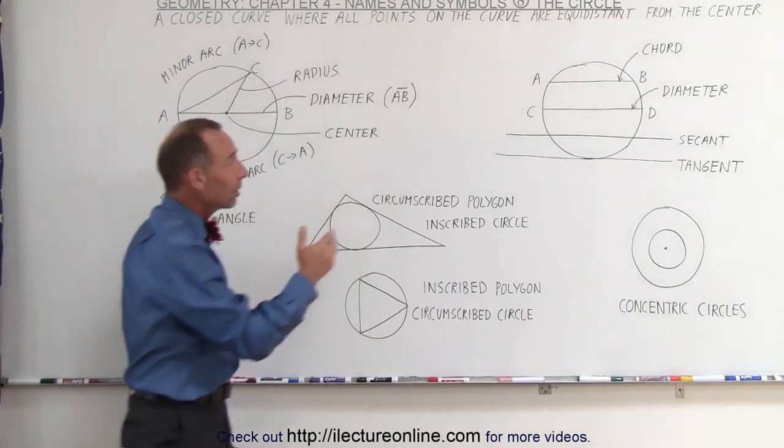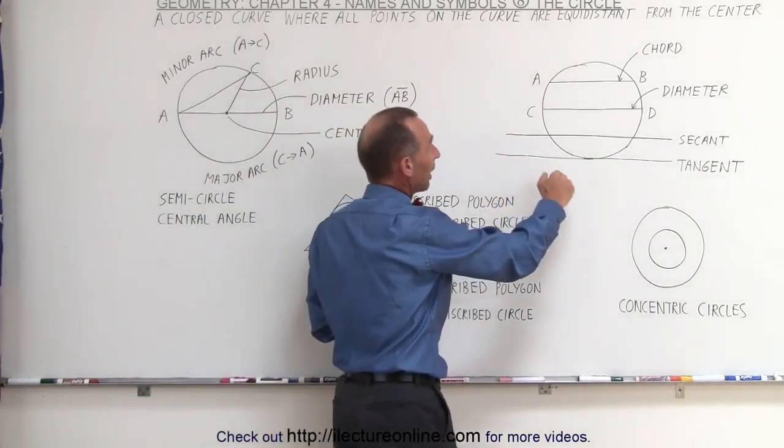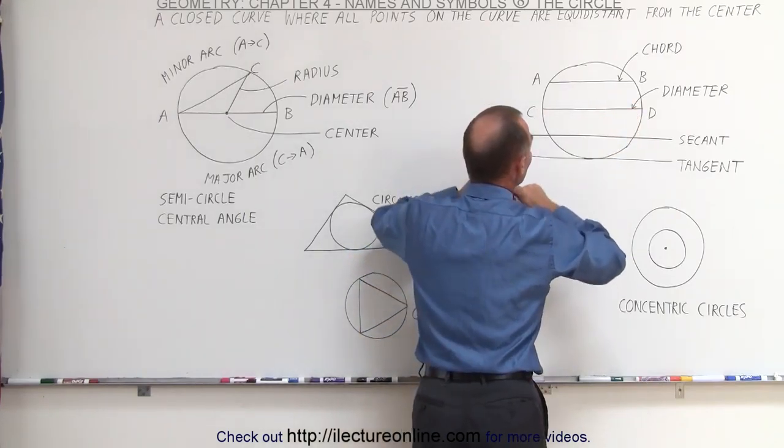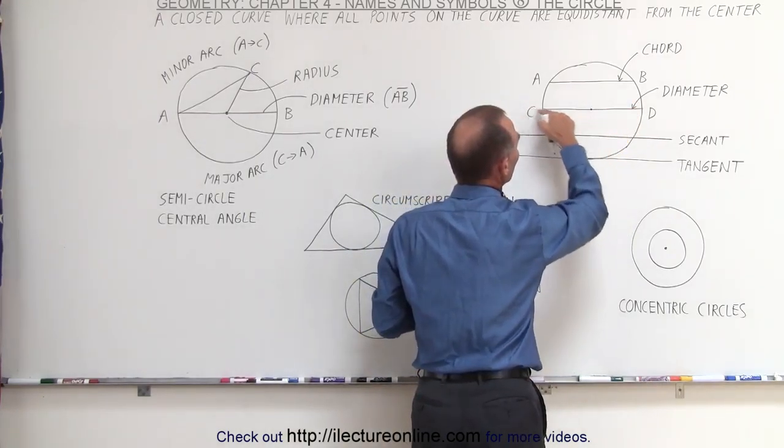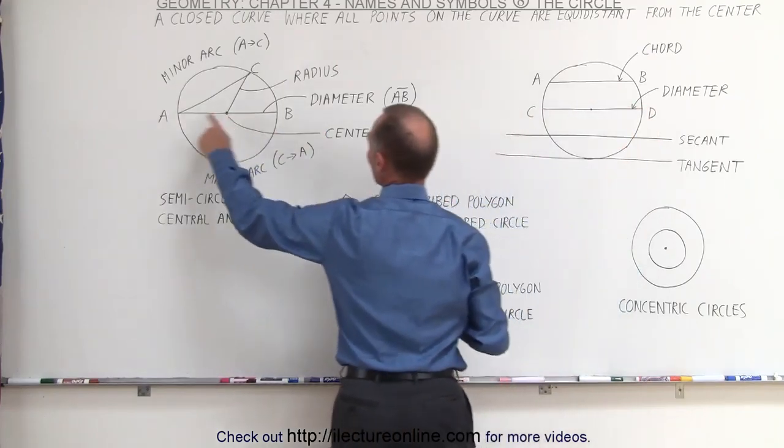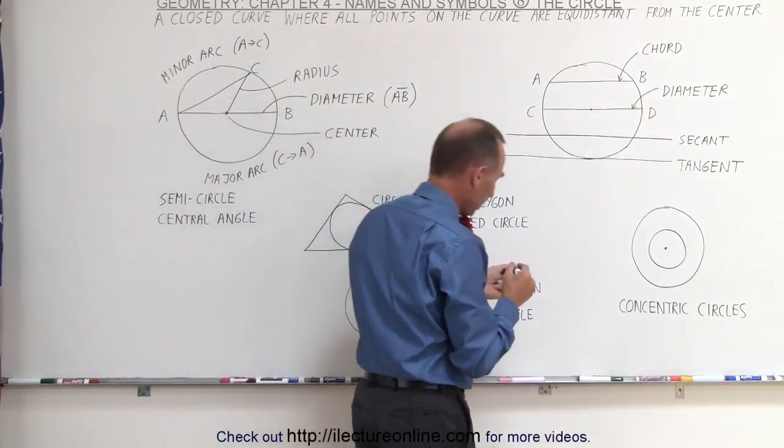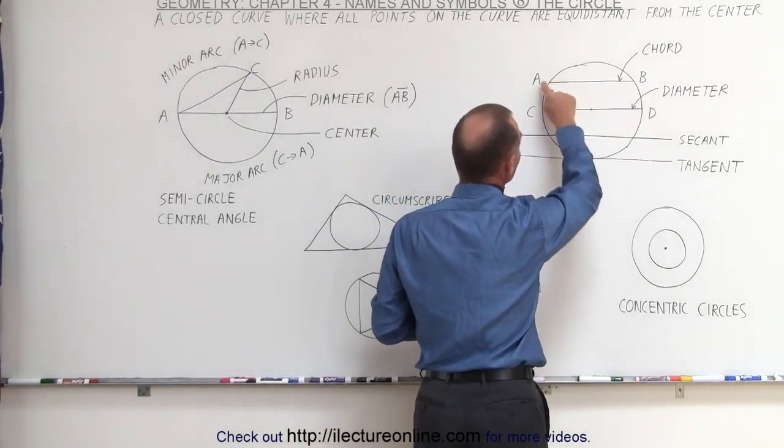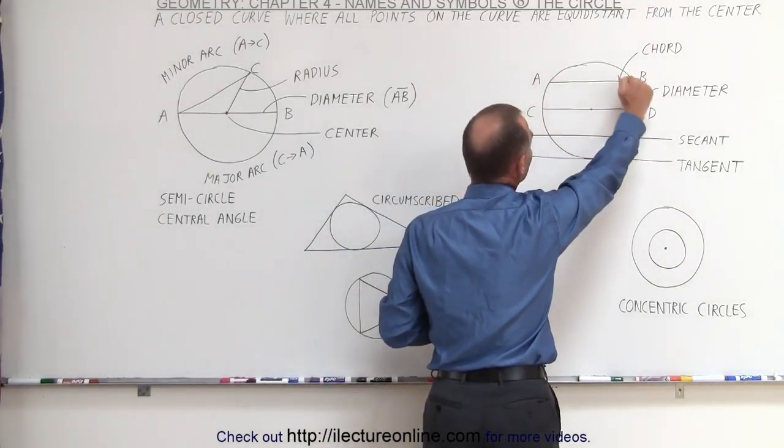Now when we go over to the right side of the board here, notice we've drawn some lines. Again, we've drawn the line from C to D. It goes to the center point right here. If this is the center, then this is also called the diameter, that's the same as going from A to B over here. But if we draw a line where it does not go to the center, like here from A to B, that's called a chord.